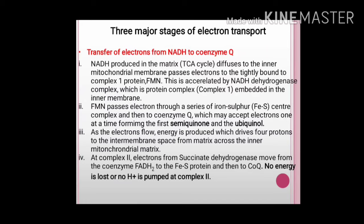At complex 2, electrons from succinate dehydrogenase move from FADH2 to the FES protein and ultimately to coenzyme Q. Importantly, at complex 2 no energy is released and no protons are pumped. Succinate dehydrogenase, a TCA cycle enzyme embedded in the inner mitochondrial membrane, transfers electrons via FADH2 to the FES protein and then to coenzyme Q. So the first part of ETC involves transfer of electrons from NADH or FADH2 to coenzyme Q, the mobile carrier.